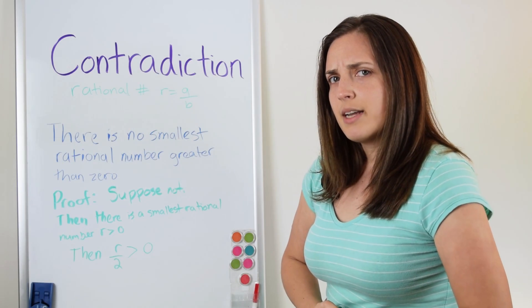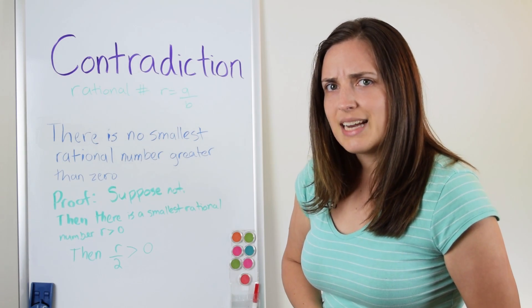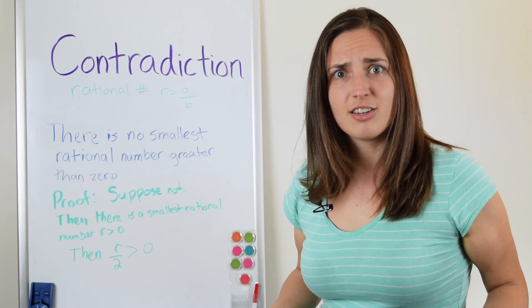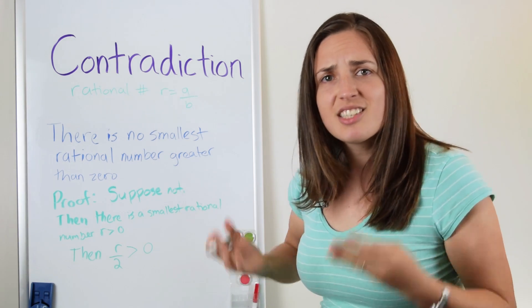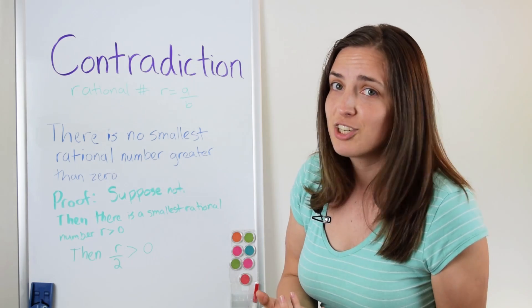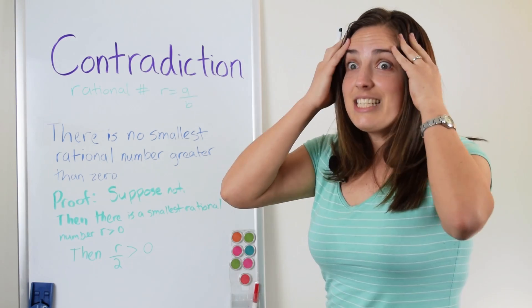So wait a minute. Isn't r divided by 2 a smaller rational number bigger than zero? How can that be? We just said that r is the smallest rational number bigger than zero. This is impossible!